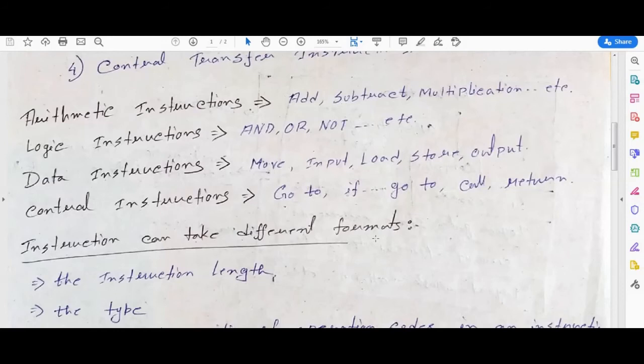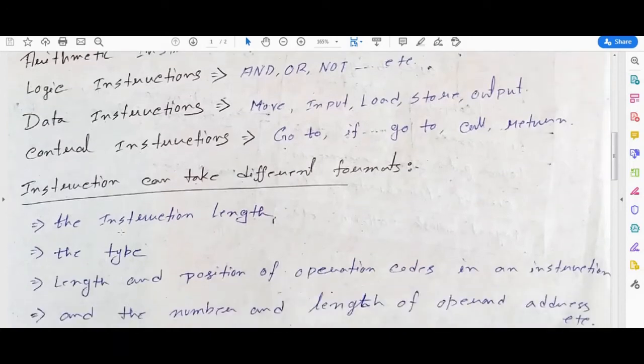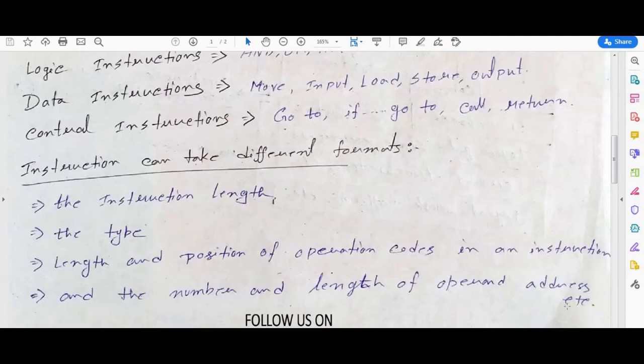So next part is instruction can take different formats. The instructions can have many types of formats, and the formats are: the instruction length (how long the instruction is), the type, and length and position of operation codes in an instruction - that is the opcode. What is the opcode and what is the opcode's position? We will discuss this soon. So we can say that instructions can take different formats - many formats can be placed in the instruction. The instruction can be created in many formats: instruction length, instruction type, instruction opcode length, positions, and operand address or length.